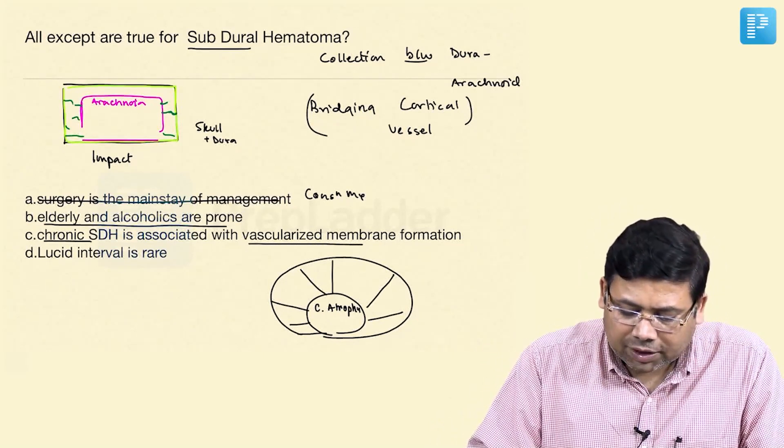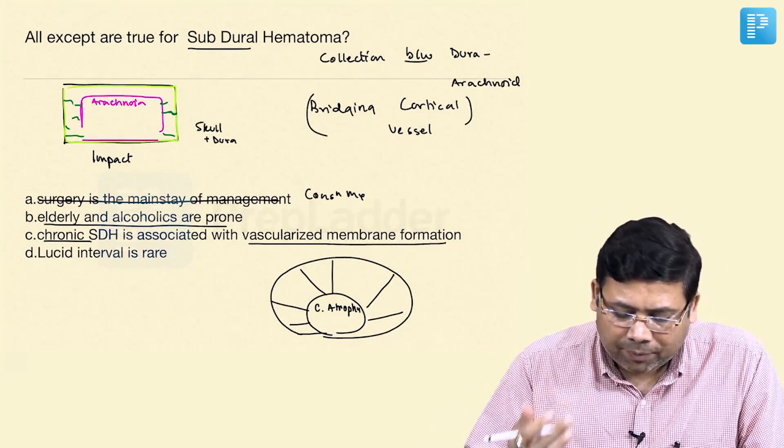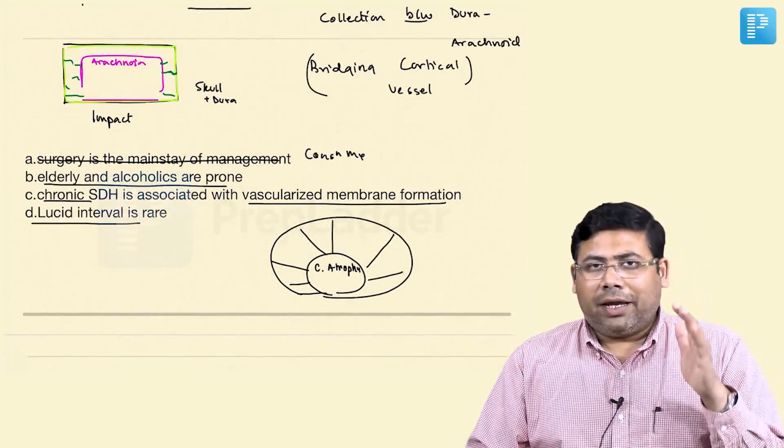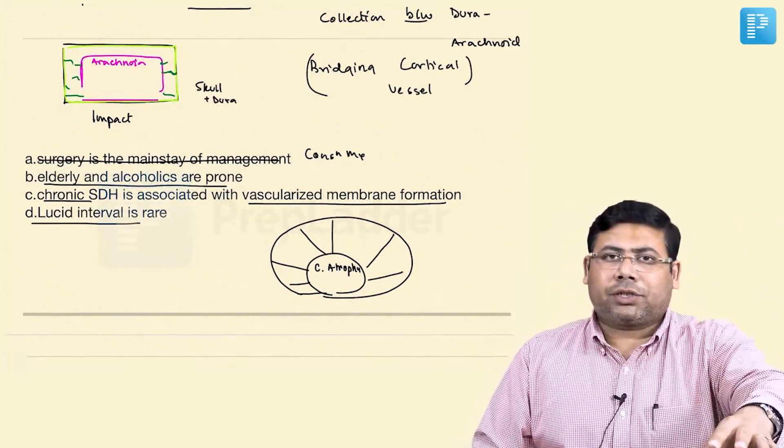Chronic SDH is associated with vascularized membrane formation and lucid interval are rare. Lucid interval in any injury is always due to a superimposed concussion.